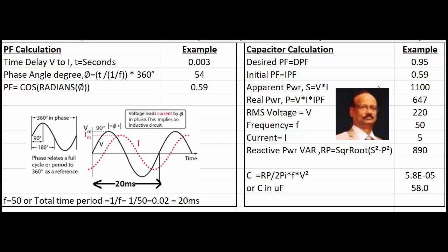For the capacitor calculation we have taken the same figure. The desired power factor is say 0.95 and initial power factor is 0.59. Apparent power is equal to V into I which is equal to this, and then the real power is this where the power factor is also multiplied. In the RMS voltage we have taken 220, frequency 50 hertz, and the current is about 5 ampere. The reactive power VAR is this much. The capacitor value by this formula is 5.8 times 10 to the power minus 5 or 58 microfarad. So this is the basic understanding of the theory.